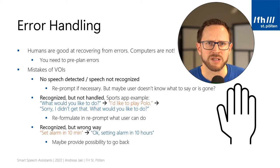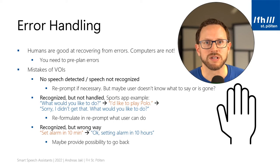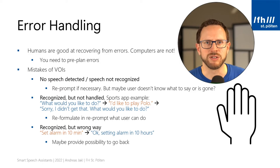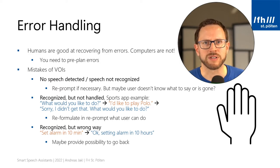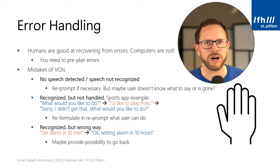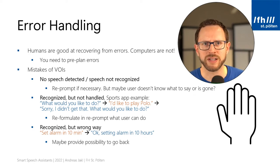Equally difficult is what to do if the user doesn't know what to respond. This is frequently happening. In one of my own research projects, where we used Alexa for the elderly, they just needed more time than the default 8 seconds to think of the answer. However, for privacy reasons, voice assistants usually don't wait longer. So try to formulate a clear question so that users know what they can say.